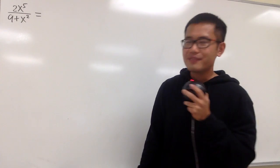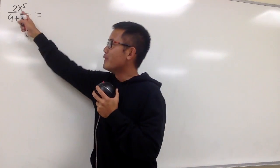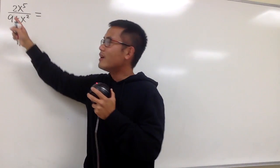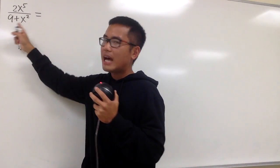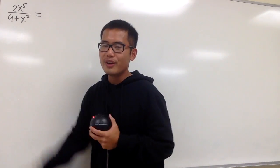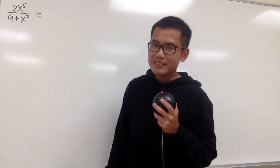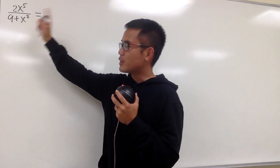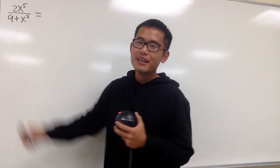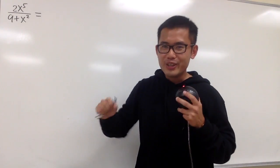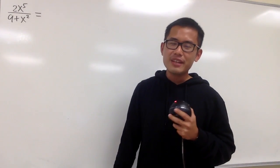We're going to find the power series expansion for the function 2x to the fifth power over 9 plus x squared. As we can see, this is just a rational function, so of course we can utilize our best friend.